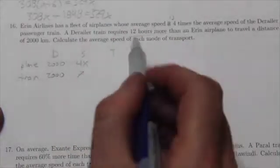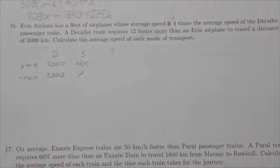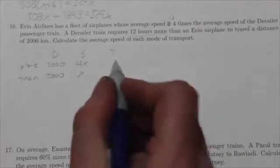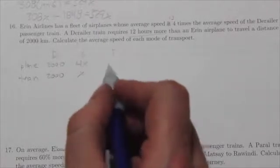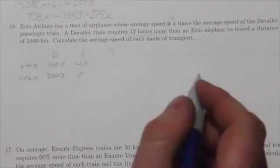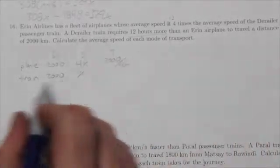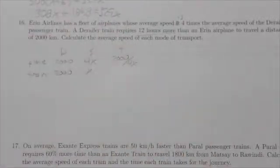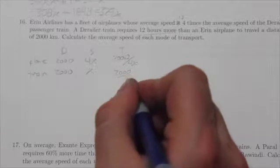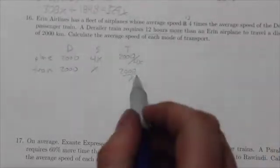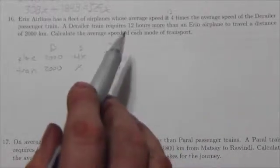Now, don't get sucked in by that 12 hours. That 12 hours is a comparison between the plane and the train. The time here is simply how much time does the plane take? The plane takes 2,000 over 4x. How much time does the train take? The train takes 2,000 over x. The difference between those is going to be 12 hours.